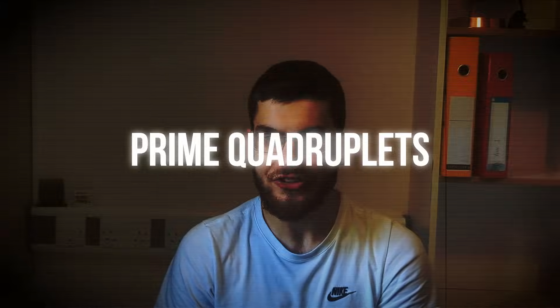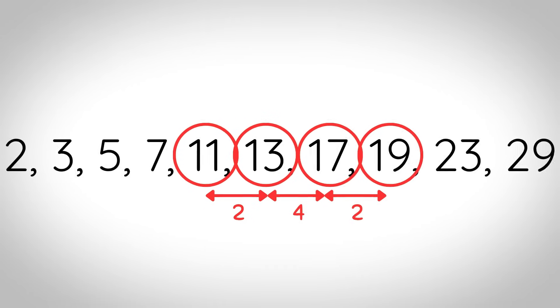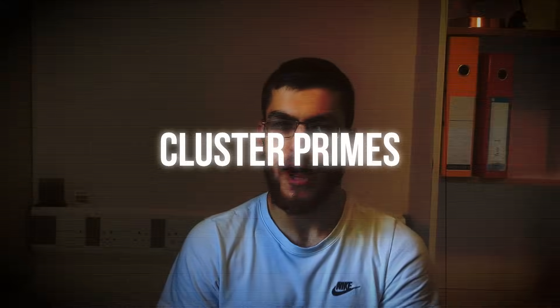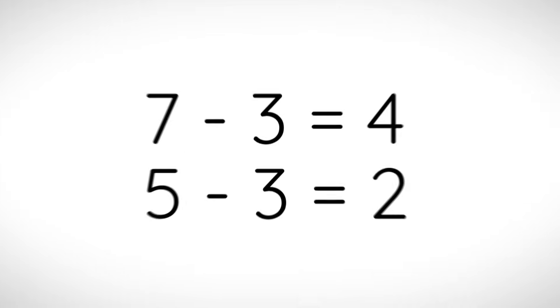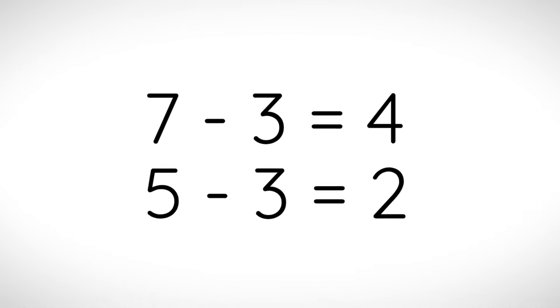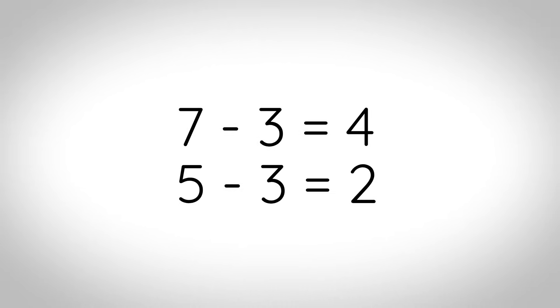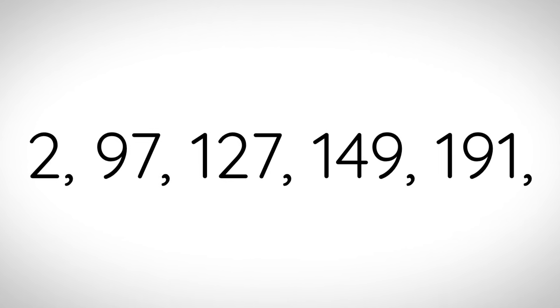Prime quadruplets: these are two twin primes separated by 4. For example 11, 13, 17 and 19. Cluster primes: a prime p where if you subtract 3, then every even number before it including the prime subtract 3 is the difference between two primes not exceeding p. The first few non-cluster primes are 2, 97, 127, 149 and 191.